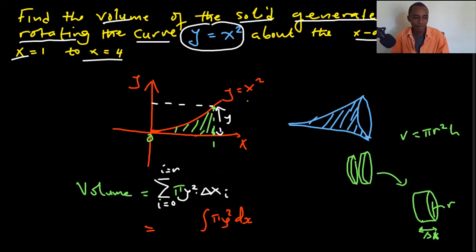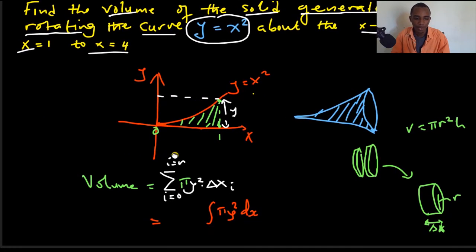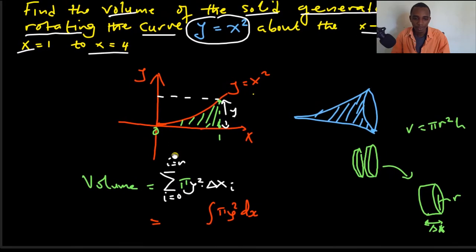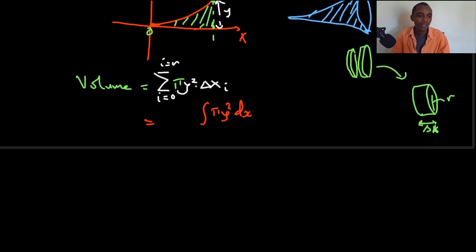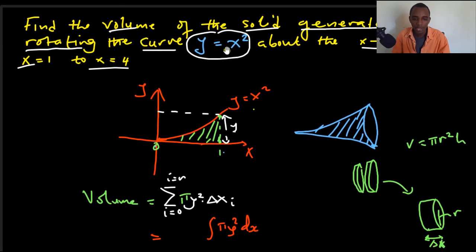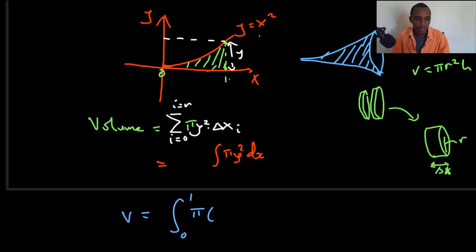Now, let's apply this to the problem that we have here. So our volume now is going to be the integral. Notice we are going from 0 to 1. And then we have pi times y squared. Our value of y is x squared. So that's going to be x squared, squared dx, right?